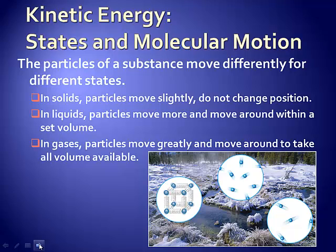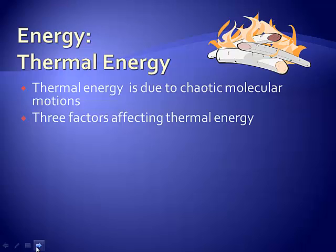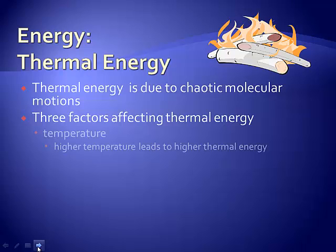The last kind is thermal energy, and thermal energy is due to chaotic molecular motions. And when we look at thermal energy, it can be controlled by three main factors. One is the temperature. Temperature is, as we'll define later, a measure of kinetic energy. So the more or the higher the temperature, that means the faster the molecules are moving, therefore the greater their chaotic molecular motion.